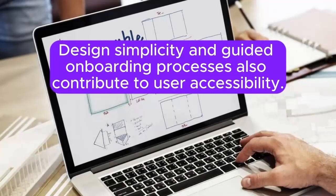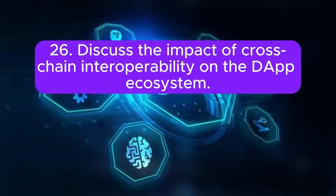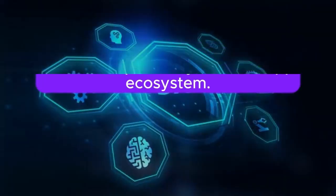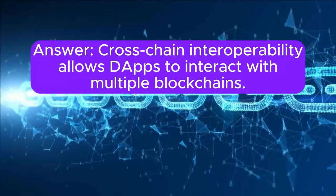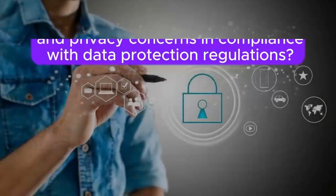Design simplicity and guided onboarding processes also contribute to user accessibility. 26. Discuss the impact of cross-chain interoperability on the DApp ecosystem. Answer: Cross-chain interoperability allows DApps to interact with multiple blockchains. This enhances flexibility, scalability, and the overall utility of DApps by leveraging the strengths of different blockchain networks.